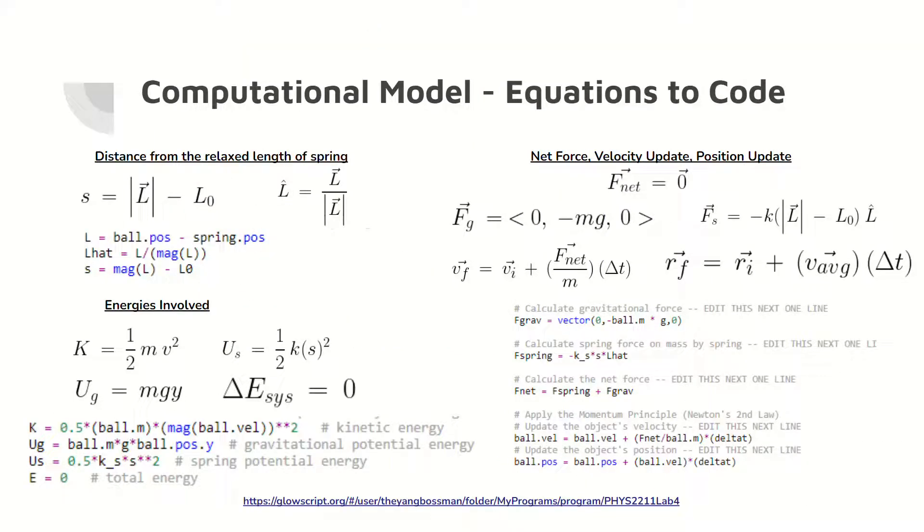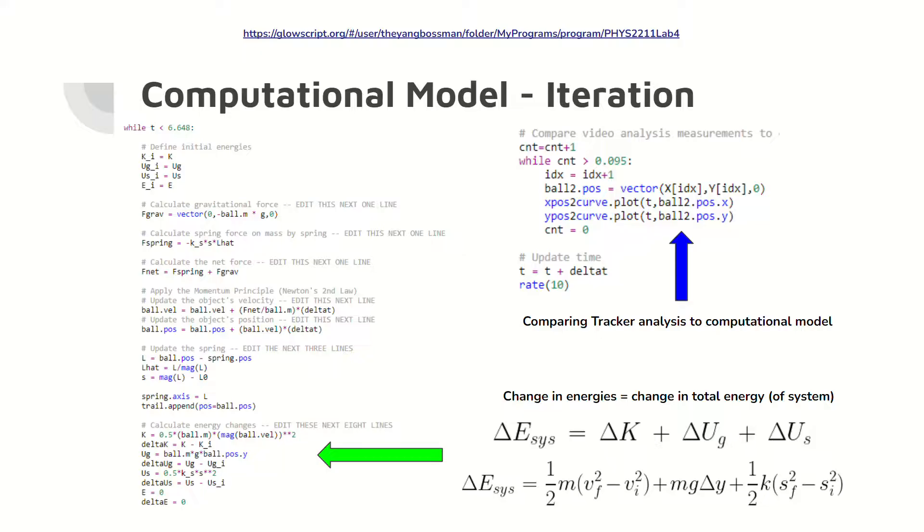Important equations for the model include the distance from the relaxed length, the energies involved, the net force, and the update formulas. The mathematical equations and their coded equivalents are shown as well. Here is the iteration step for the computational model. Note that the changes in energies for the energies involved are converted from mathematical equations to code. Also, note the code for comparing the tracker analysis with the model.